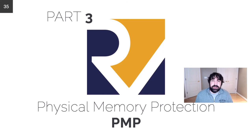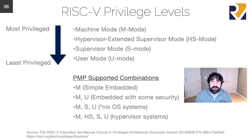Finally, let's look at RISC-V Physical Memory Protection, or PMP. We'll start with the RISC-V privilege levels, which are similar to those in Intel and ARM platforms. Moving from most privileged to least: machine mode (M-mode), hypervisor-extended supervisor mode (HS-mode), supervisor mode (S-mode), and user mode, the least privileged. I've listed here the different PMP-supported configurations and combinations of these modes that are available.